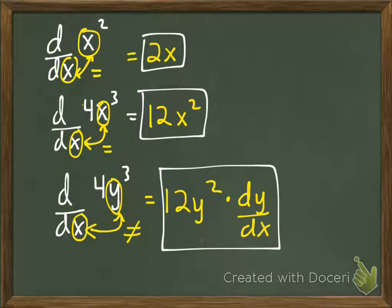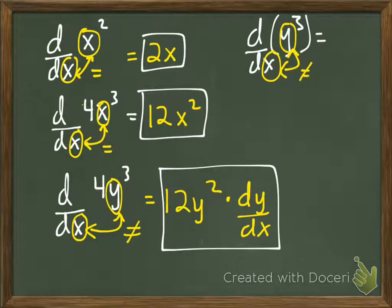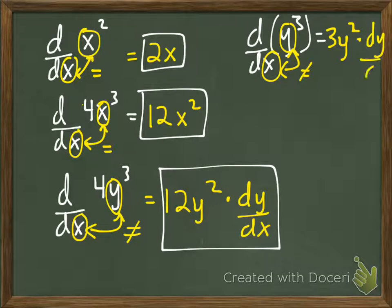Try this one: the derivative of y³ with respect to x. Pause the video and try that one. The letters are not equal. So we take the derivative of the outside: 3y². Then multiply by the derivative of the inside — the derivative of y with respect to x, which is dy/dx. That's it.